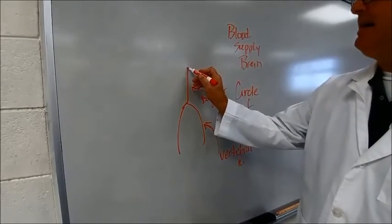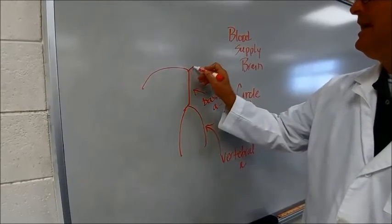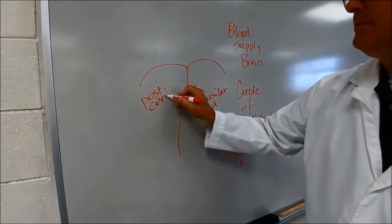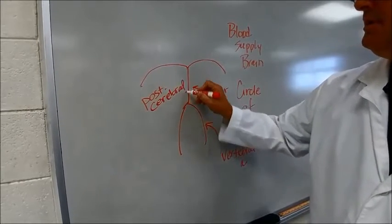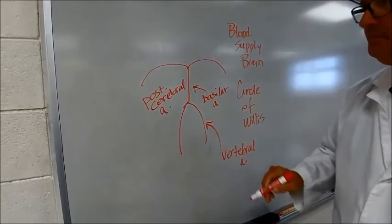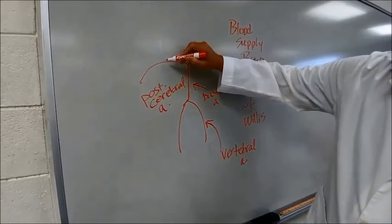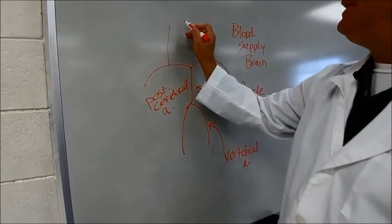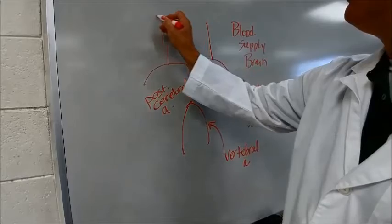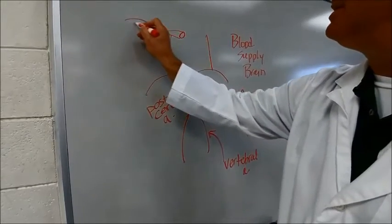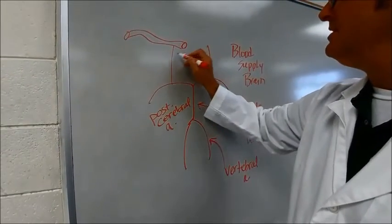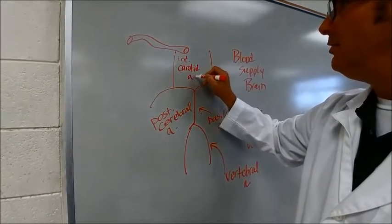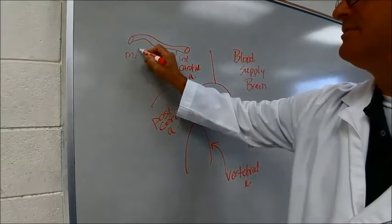Then, there is a bifurcation. There are some communicating arteries that connect from the posterior cerebral to the incoming internal carotid, which then gives rise to the middle cerebral.